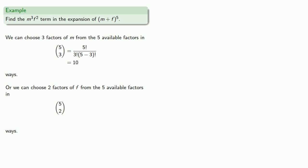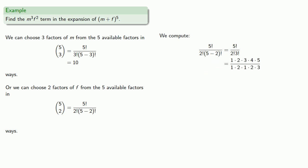What about 5 choose 2? Let's compute that. 5 factorial divided by 2 factorial times 5 minus 2 factorial. That's 5 factorial divided by 2 factorial 3 factorial. Writing these out, removing the common factors, and computing gives us 10.